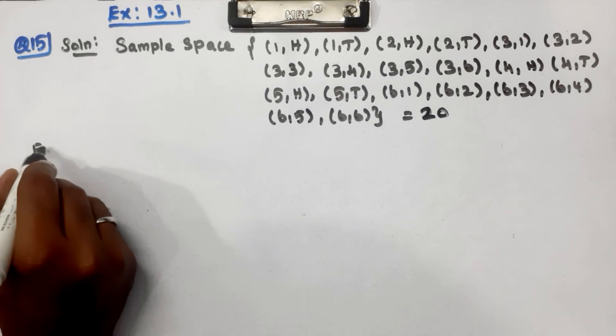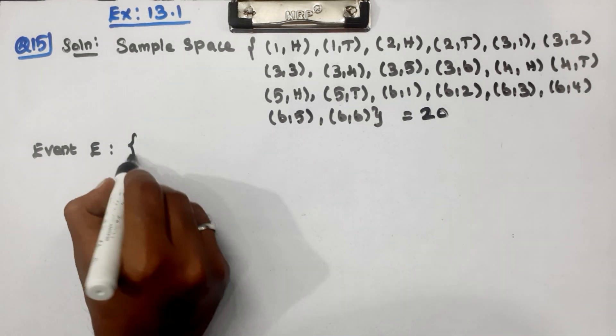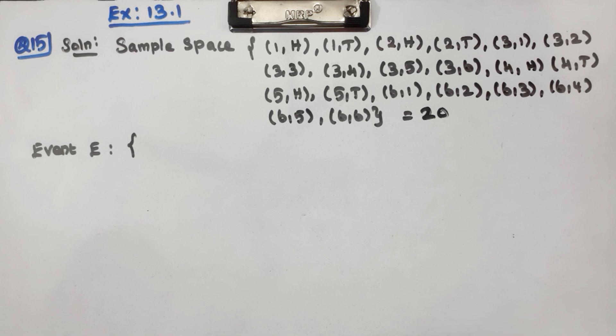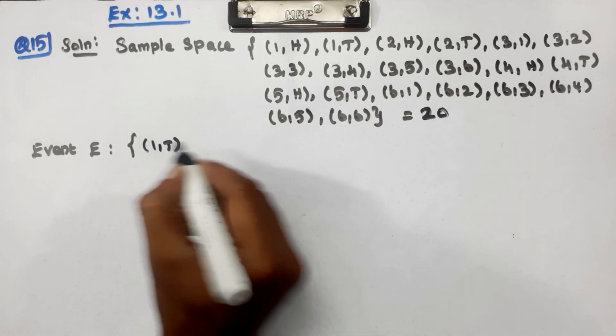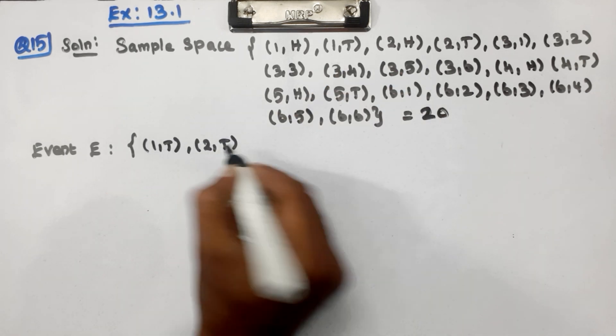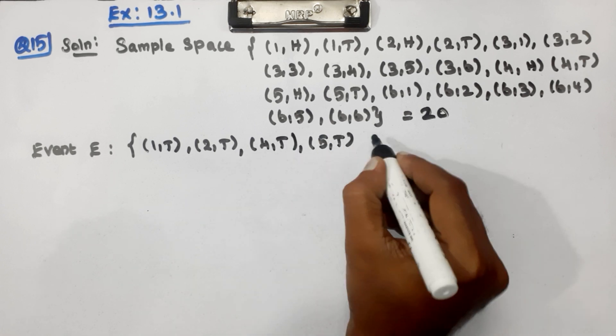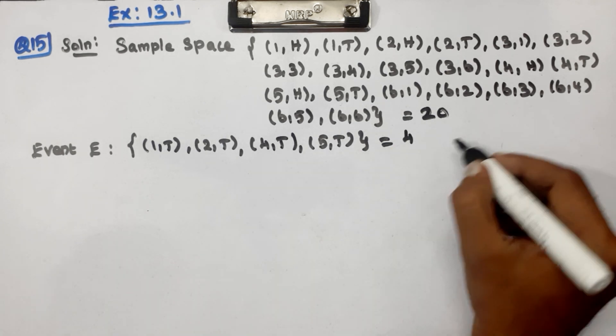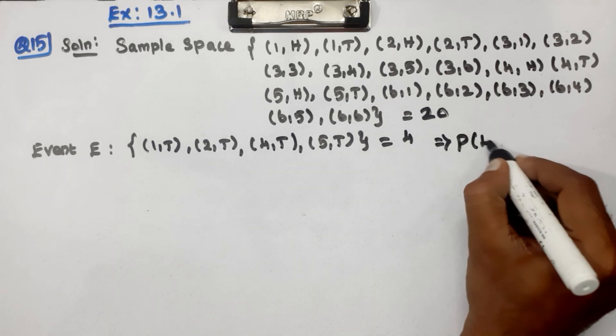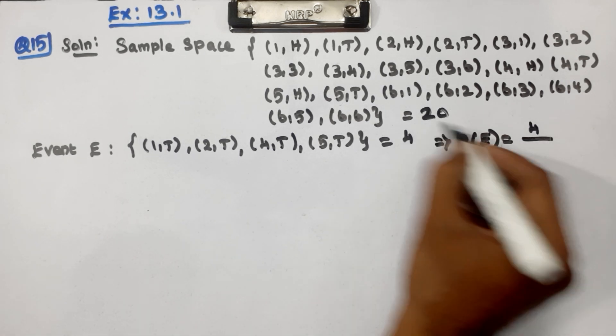Now the first event E is tail. The tail outcomes are (1,T), (2,T), (4,T), (5,T). That's 4 favorable outcomes. Probability of E equals 4 over 20.